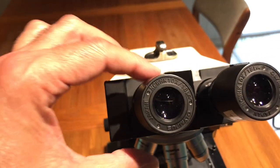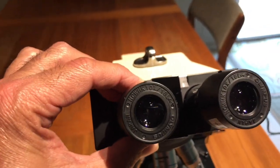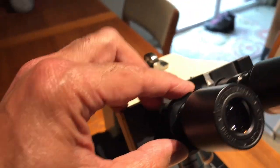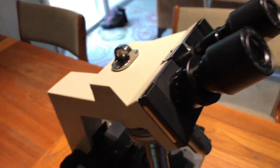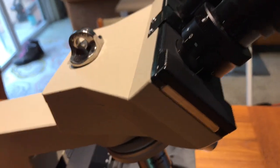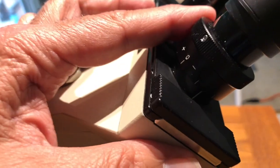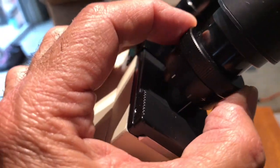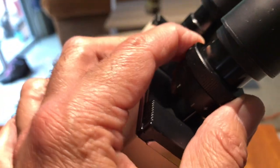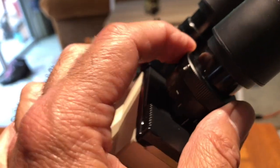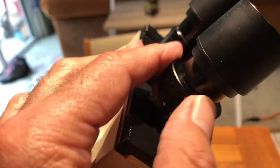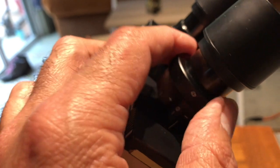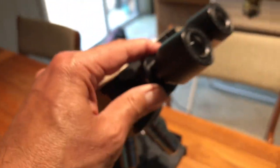Starting from the top, we have the two eyepieces. The left eyepiece has what is called a diopter, which you can use to adjust to your left eye. Usually our eyes are a little bit different, and so this allows you to correct for the differences between your left and your right eye.